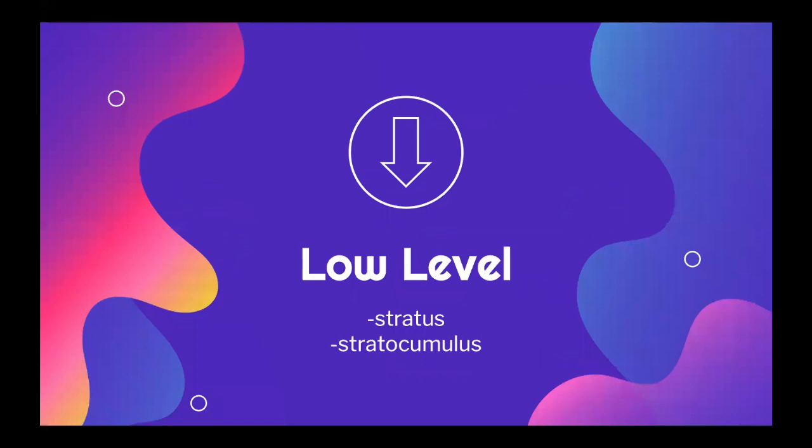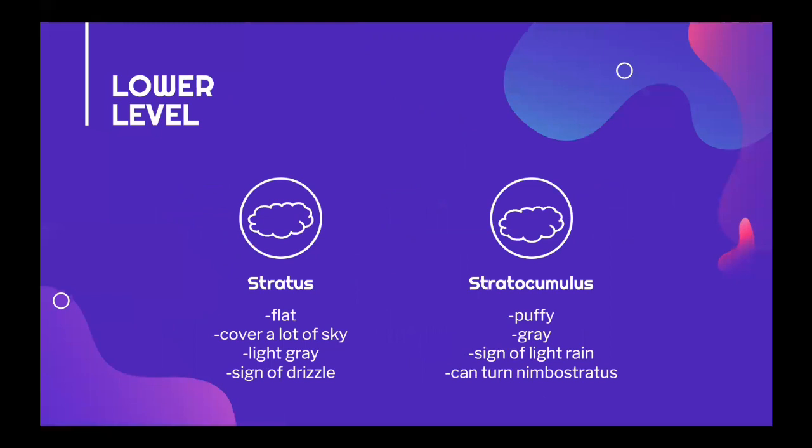On the low level of clouds there are the stratus and stratocumulus clouds. Stratus clouds are flat and cover lots of sky. They're usually light gray and they appear when it's going to drizzle. Stratocumulus clouds are puffy gray clouds which appear if it's going to rain a little. However, these clouds can often turn into nimbostratus clouds.